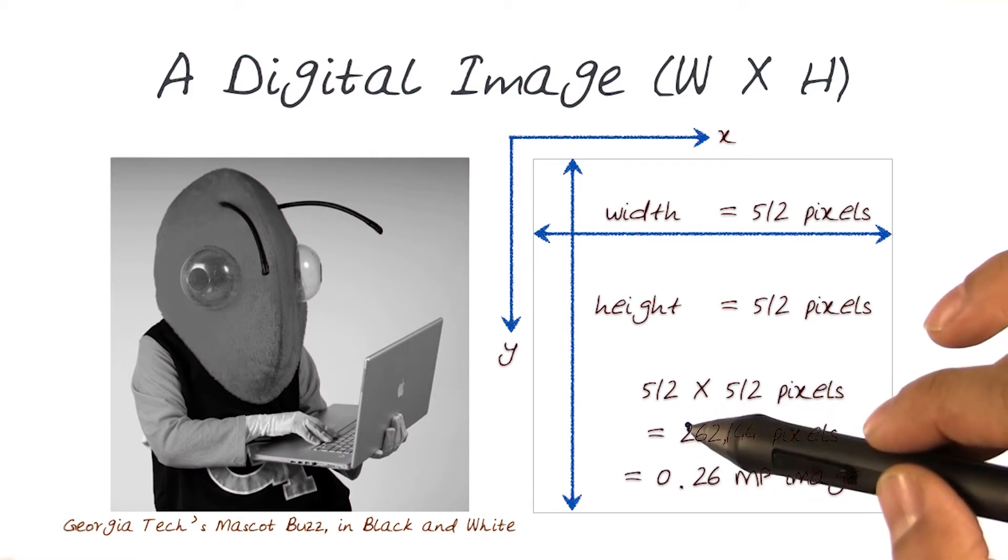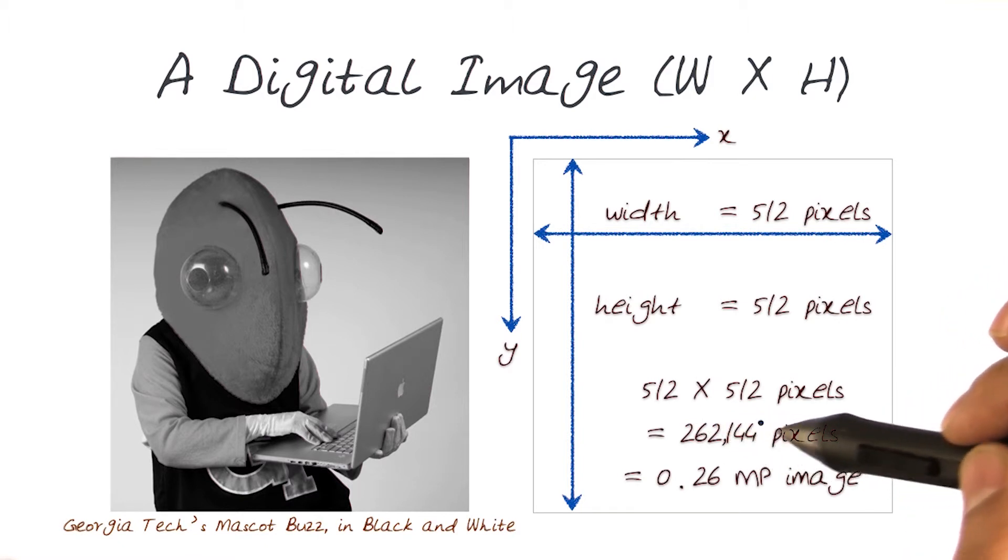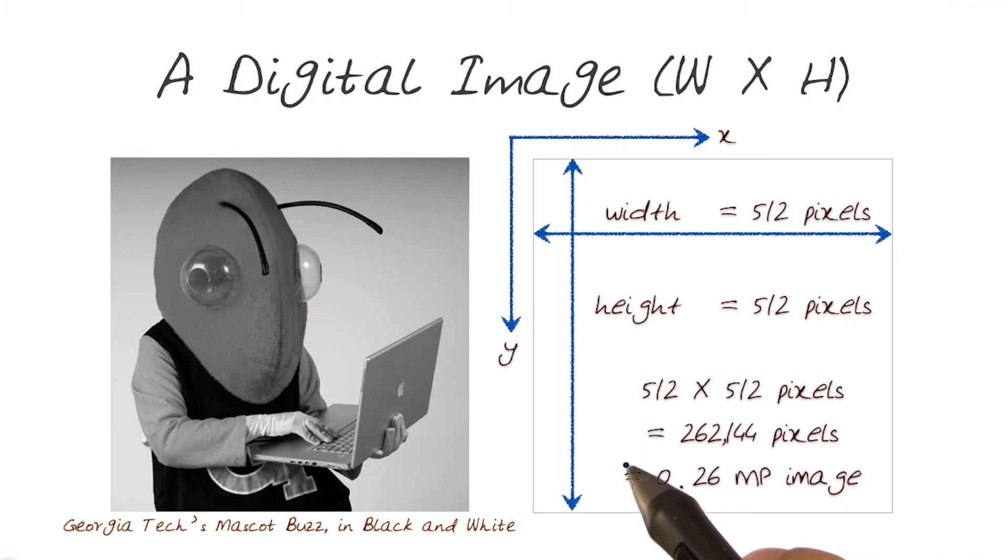you basically get an image that has about 262,000 pixels. And this converts it into a 0.26 megapixel image. And this is the approximate number of megapixels this image has.